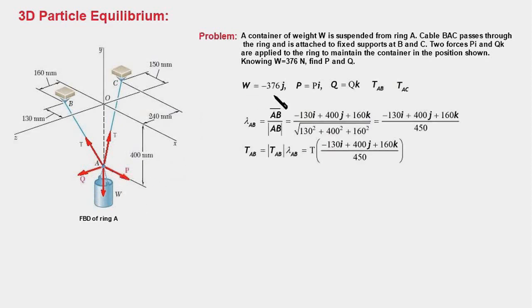So let's list down all the five forces. W is along the negative y-axis, therefore it is minus 376j. The force P is parallel to the x-axis, therefore it is P times i. Similarly, Q is Q times k because it is parallel to the z-axis. We do not know the direction of TAB and TAC.